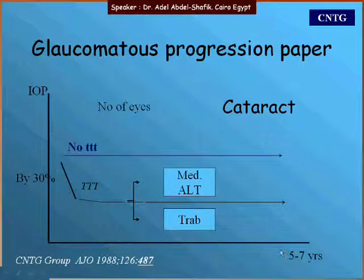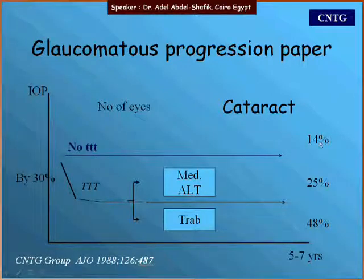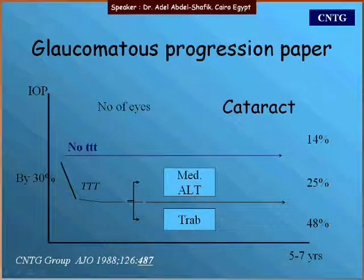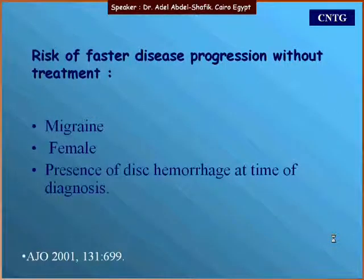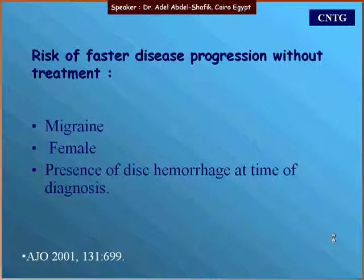Regarding cataract incidence, the rate in the no-treatment arm was 14 percent, in the arm treated medically and with laser it was 25 percent, and in the arm treated with trabeculectomy it was 48 percent. Regarding risk factors for progression, migraine, female sex, and the presence of disc hemorrhage at the time of diagnosis were all identified as risk factors for progression.